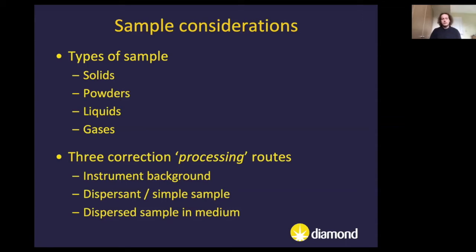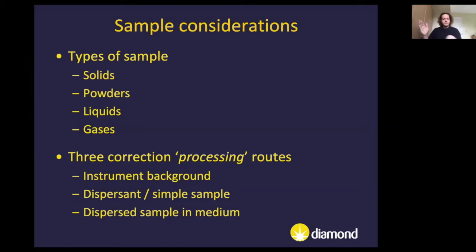For a sample dispersed in a medium, you build up your background subtraction chain: first the instrument background, then the sample cell, then the sample cell with just the matrix or solvent, and finally the measurement with the sample itself. By subtracting each contribution in turn, you isolate the scattering contribution of each component, so that what remains at the end is the scattering from your sample alone.